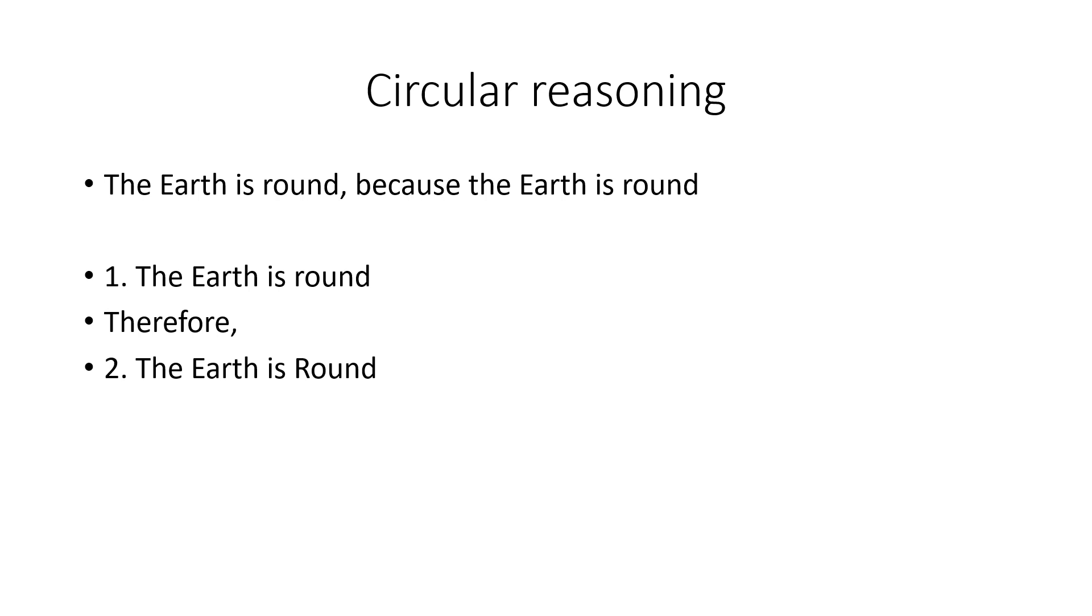But there's something wrong with the argument. What's wrong with the argument is that the premise we give is exactly the same as the conclusion. What we call this is circular reasoning, because the premise that we're giving to argue for our conclusion is the very thing we're trying to argue for.